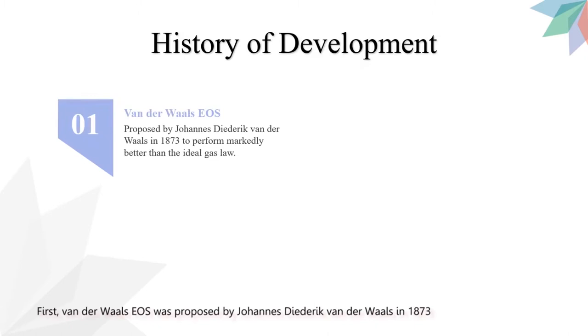Now, we are going to talk about the history of development. First, van der Waals' equation of state was proposed by Johannes Diederich van der Waals in 1873 to perform markedly better than the ideal gas law.